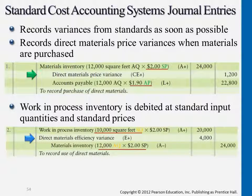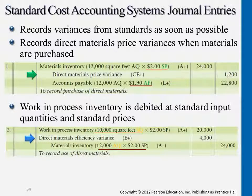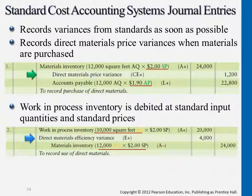Remember, transactions are only captured whenever they actually happen — as it happens, we record these transactions. So standard price is already captured somewhere a few months ago in the budgeted system. We want to show here that there are differences between what we originally planned and what actually happened. What actually happened is $1.90 for each square foot of materials. We used 12,000 square feet, so the actual amount we paid is only $22,800. But we budgeted earlier at $2, so we have differences here — we call it direct material price variance.